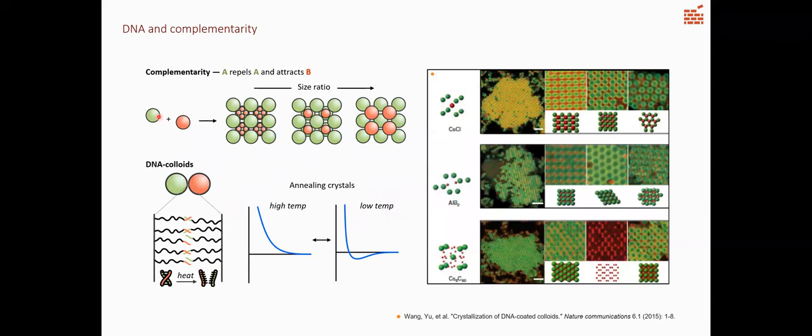A really good strategy to expand the structures that you can assemble is to program an interaction that has complementarity. Simply put, like particles repel each other, but dissimilar particles attract. Then you gain this new tuning knob for the structure, which is the size ratio between those two particles. If one particle is much smaller than the other, or if they're equal in size, they find different packings and you can access different crystal structures.